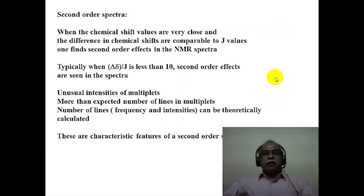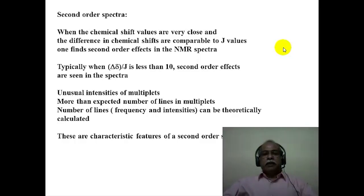Now, let us consider what constitutes a second order spectrum. Consider two spins, H_A and H_B. If the chemical shift values of these two spins are very close together, such that the difference in the chemical shift values are comparable to the J value, one finds second order effects in the NMR spectrum. Typically, when the ratio of delta-delta — the difference in the chemical shift value of A and B — to the J value is less than 10, second order effects are seen in the spectrum.